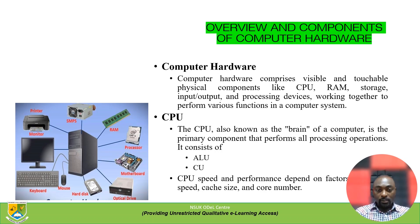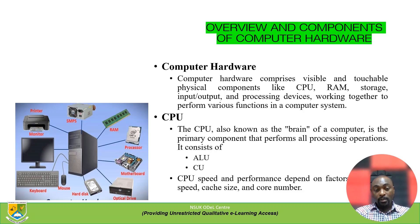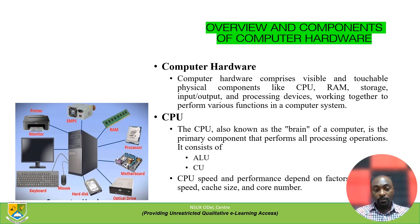The Central Processing Unit, which is regarded as the brain of the computer, is one of the primary basic components that performs all processing operations. It actually consists of what is referred to as the ALU — that's the Arithmetic and Logic Unit — and also the Control Unit.